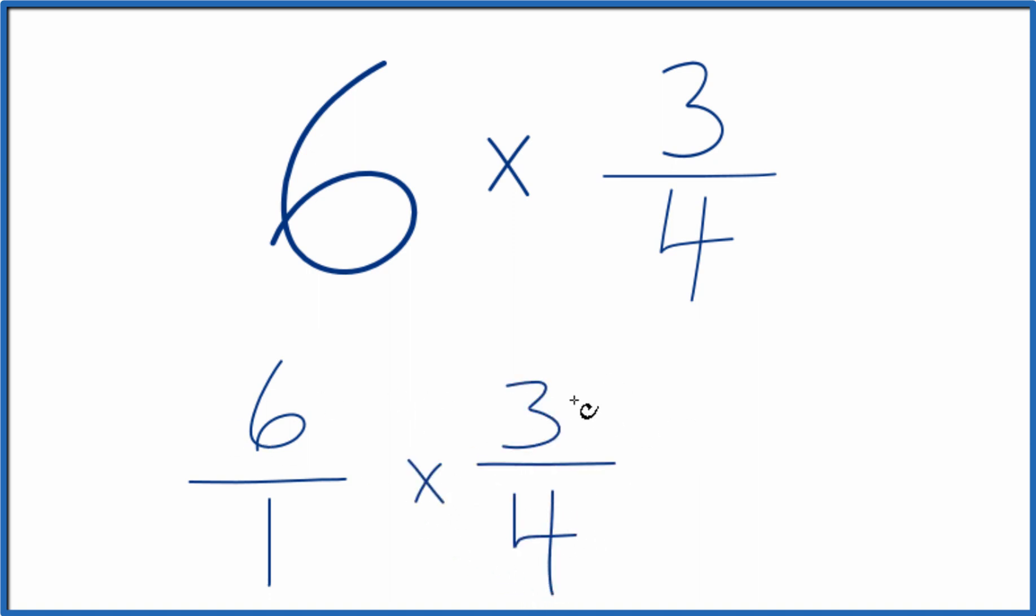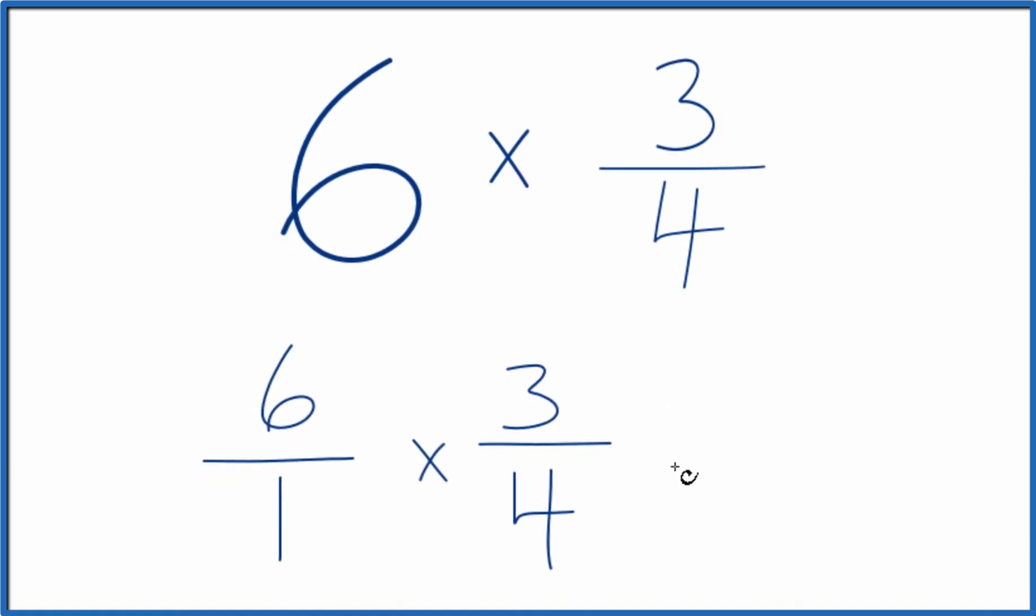When we multiply fractions, we multiply the numerators and the denominators. 6 times 3, that's 18. And then 1 times 4, that's 4. So we have 18 fourths.